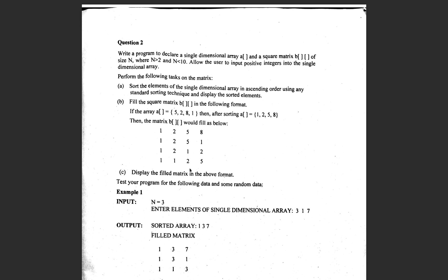The question says: write a program to declare a single dimensional array and a square matrix B of size N, where N is greater than 2 and less than 10. The single dimensional array also has N elements, and the square matrix B has dimension N. Allow the user to input integers into the single dimensional array, then sort the elements of the single dimensional array in ascending order using any standard sorting technique and display the sorted results.